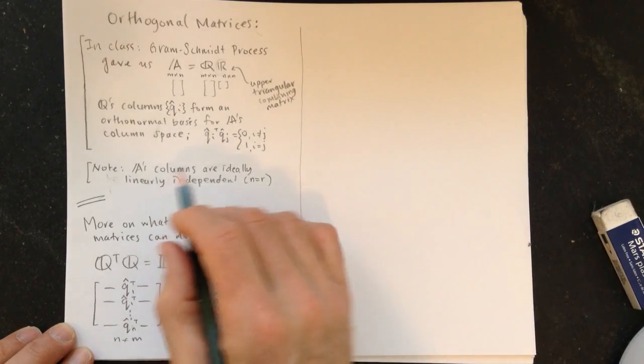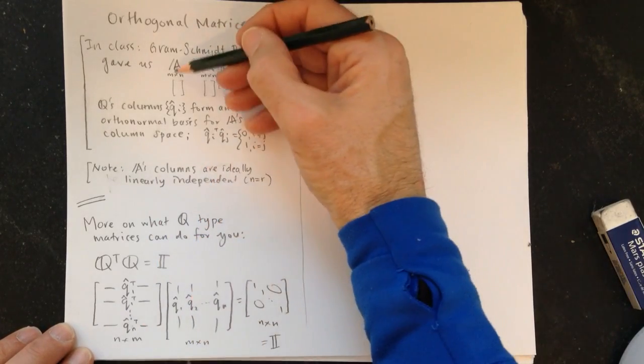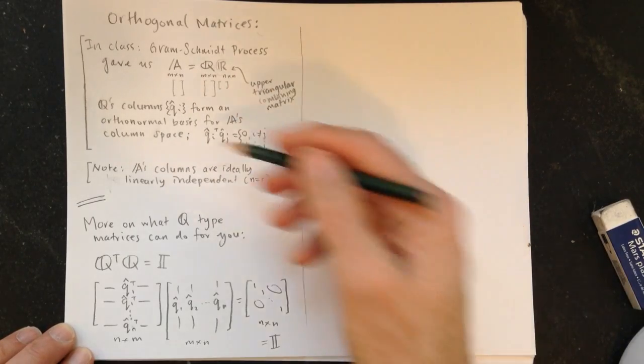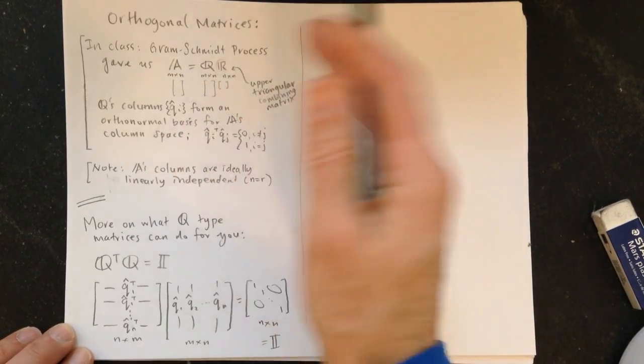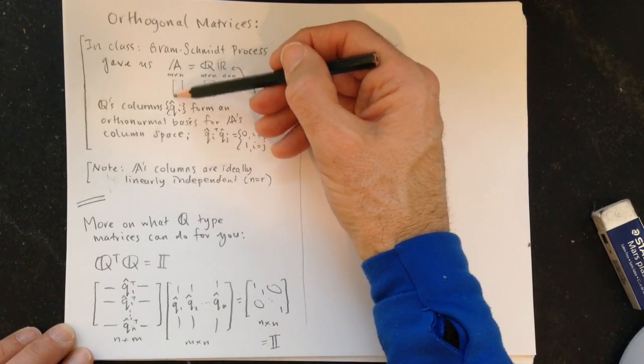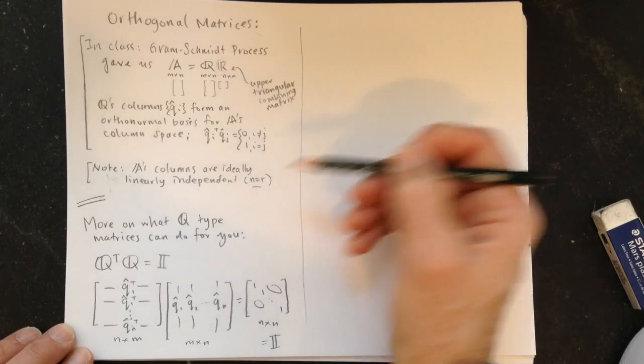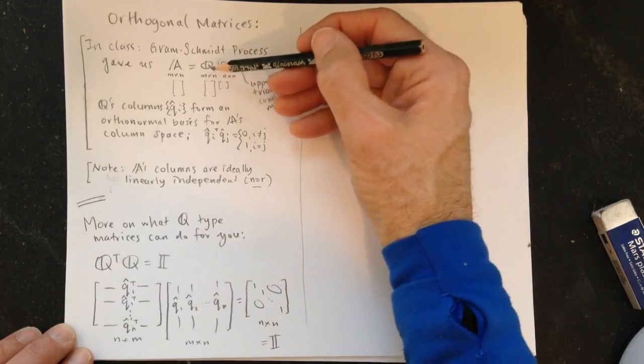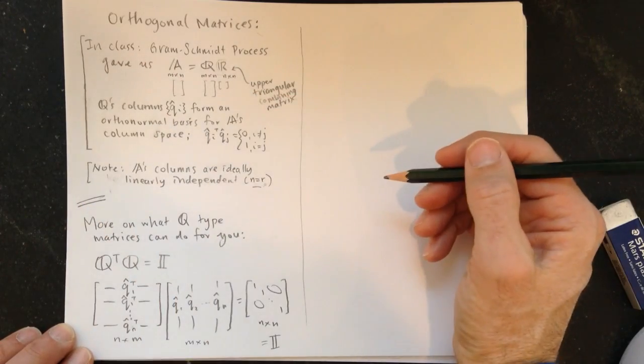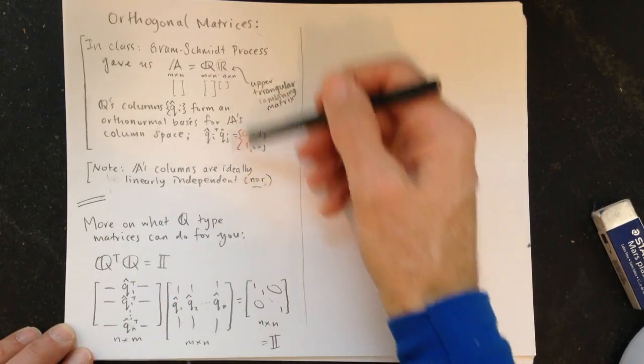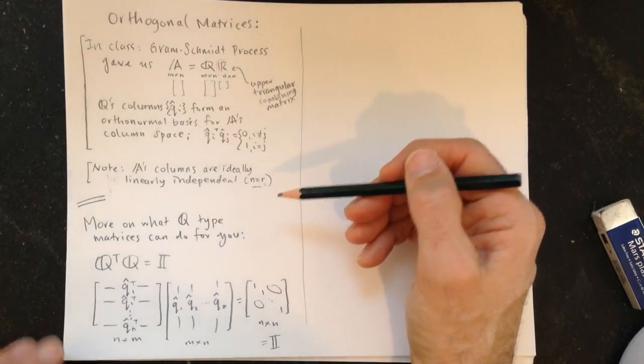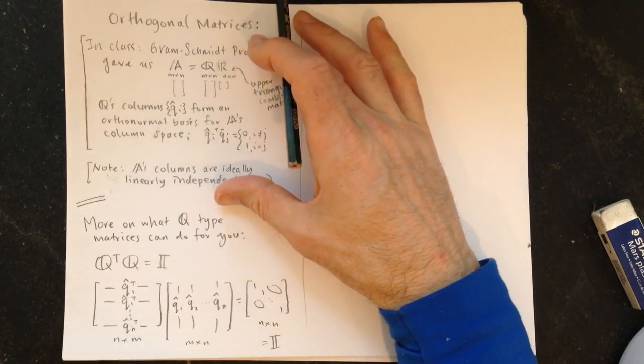Okay, good. So it's good if we start with linearly independent columns, and we can deal with it otherwise, but these columns are linearly independent. It's going to be more often true when the matrix is tall and thin, so N equals R, the rank of the matrix. So that means we'll get a nice full set of vectors here in Q. Alright, so let's just do a little recap.